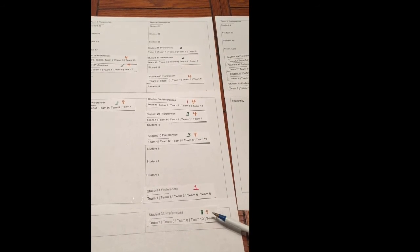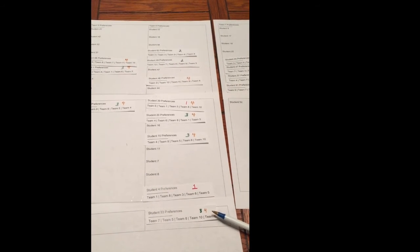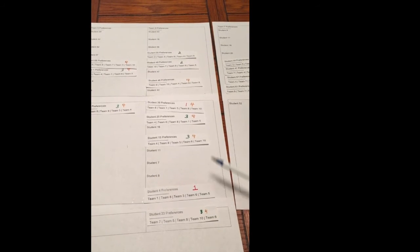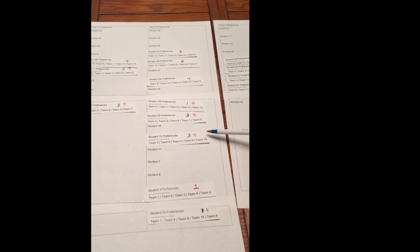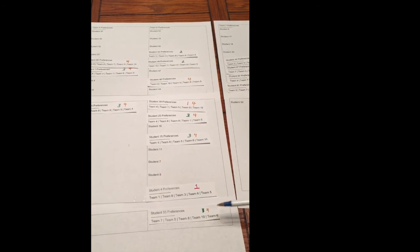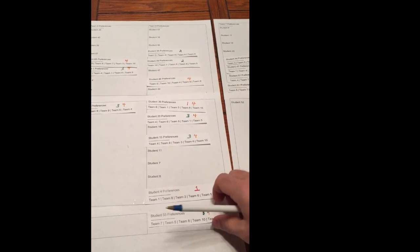In our example, Student 33 is the lowest ranked student, and they have Skills 3 and 4. But because we have Skills 3 and 4 already covered by students ranked higher, we can remove Student 33 from Team 6.